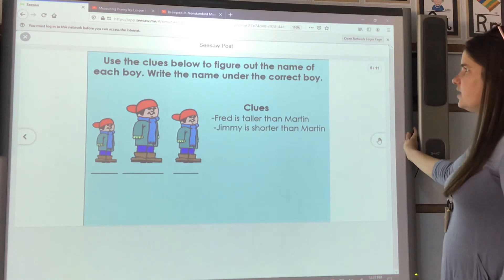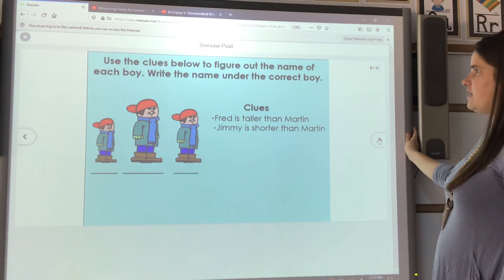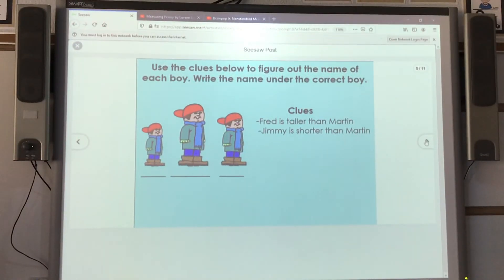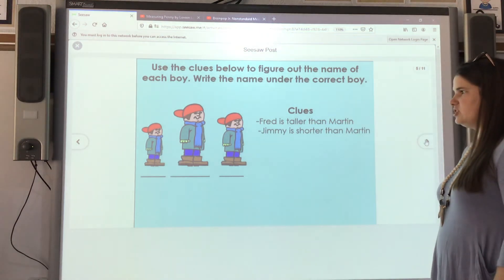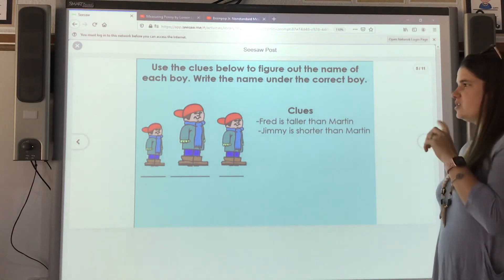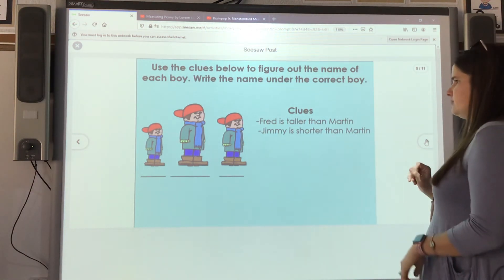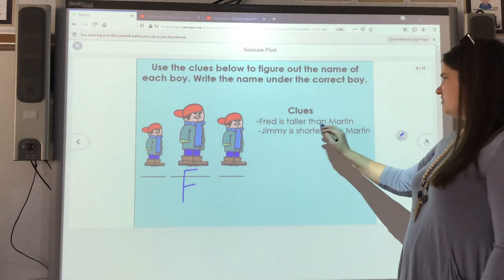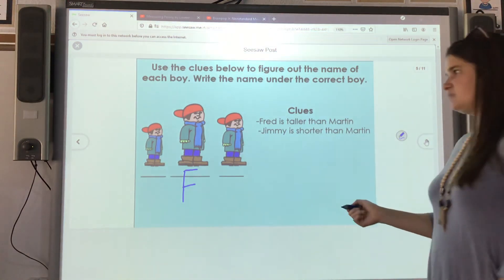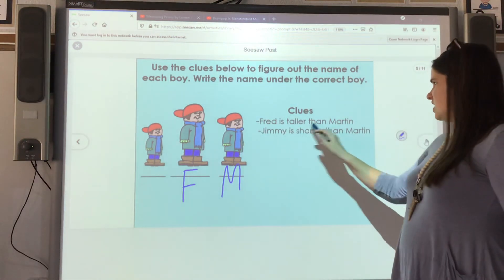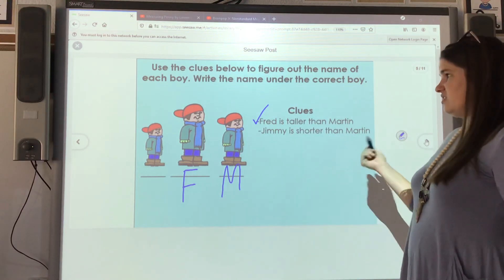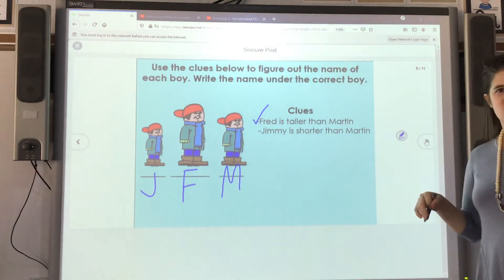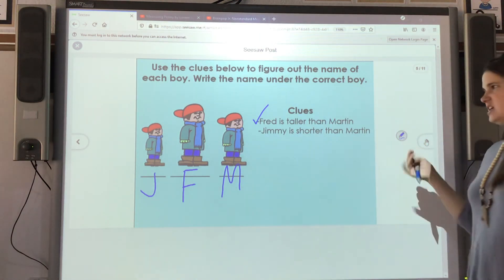So sometimes these ones are tricky. So we're going to do this one together. So use the clues below to figure out the name of each boy. Write the name under the correct boy. So Fred is taller than Martin and Jimmy is shorter than Martin. So if Fred is taller than Martin but Jimmy is shorter than Martin. So Fred must be the tallest because Fred is taller than Martin and Jimmy is shorter than Martin. So that must mean Martin must be the one that's in the middle because Fred is taller than Martin. So I check that one off and Jimmy is shorter than Martin. So if I put Jimmy right here, that last one would be shorter. So this one would be Jimmy. So think about those. Once you have your tallest person placed, it should really be easy and your people should fall into place.